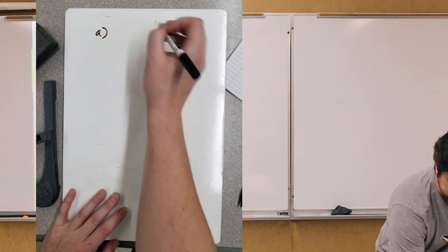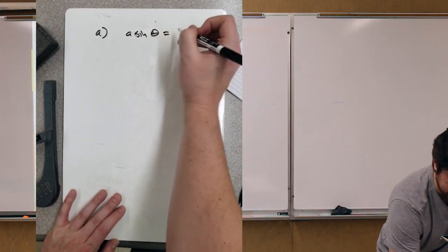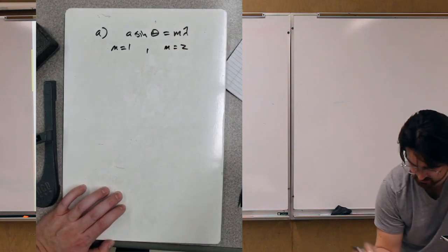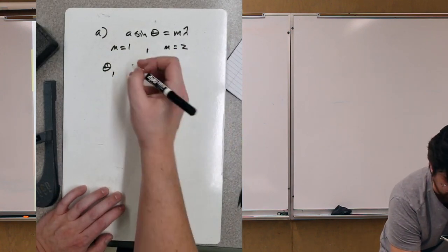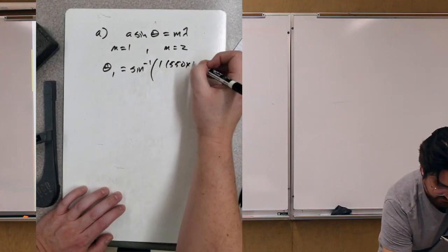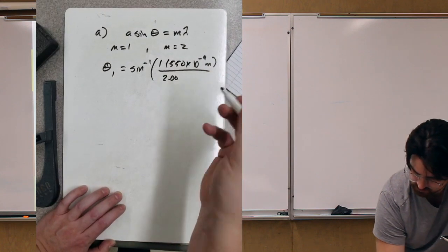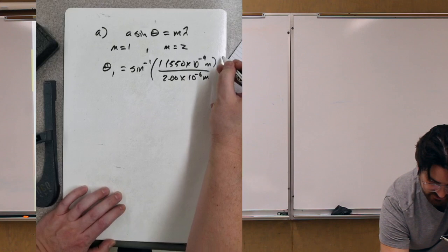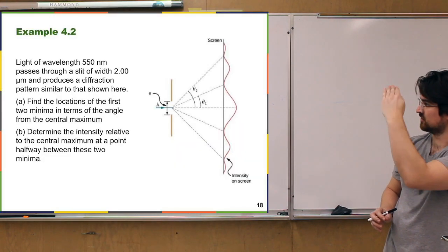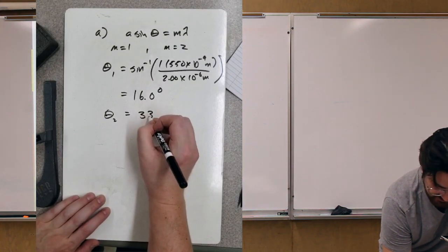We're talking about the minimums first. We can go back to our destructive condition for single slit diffraction. For the first minimum, sine of theta equals one times lambda over the slit width: 550 nanometers, or 5.5 times 10 to the minus 9 meters, over 2 micrometers, or 2 times 10 to the minus 6 meters. That gives about 16 degrees. For the second minimum, plugging in the same values except m equals 2, we get 33.4 degrees.